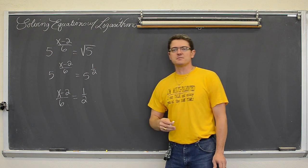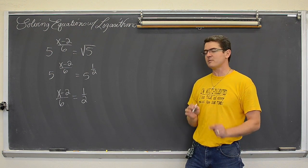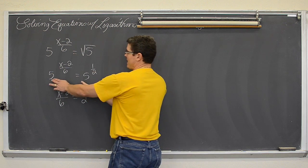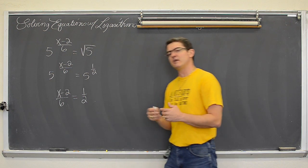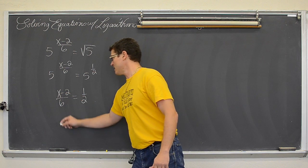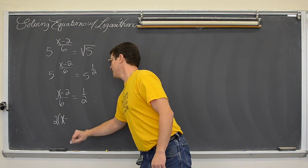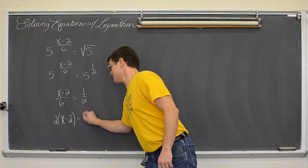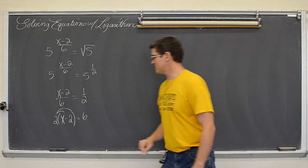A lot of those problems will not require you to do cross multiplication, but just the point of if you get like bases, you just have to have your exponents be equal to each other. So when I cross multiply, I am going to get 2 times (x-2) equals 6, distribute the 2 through.